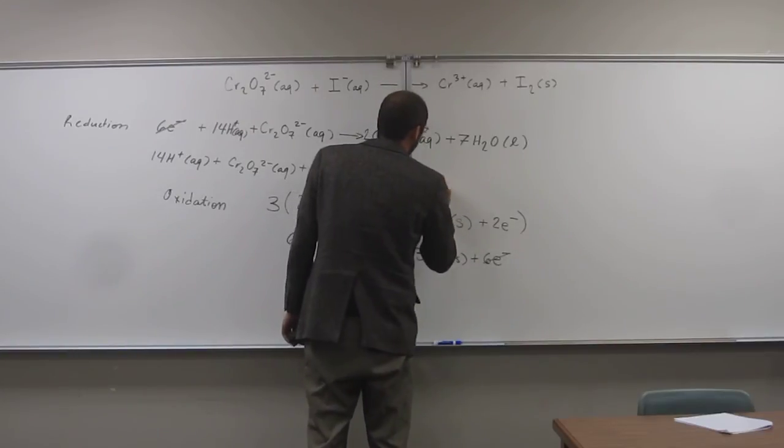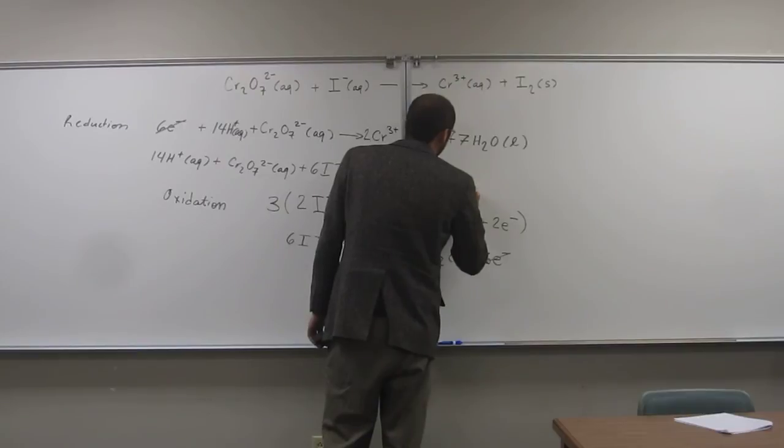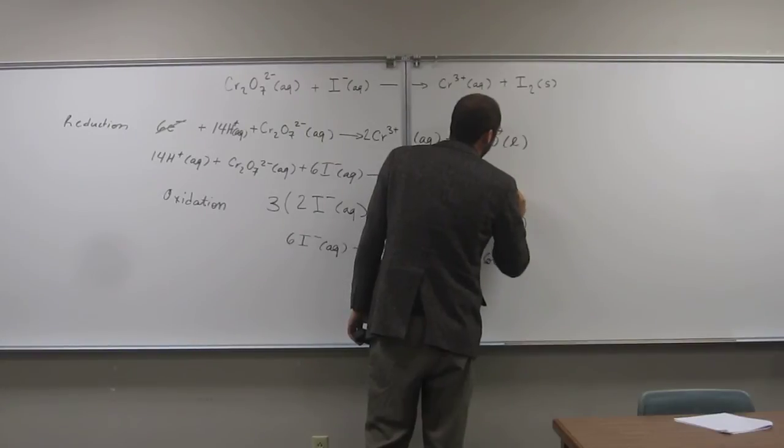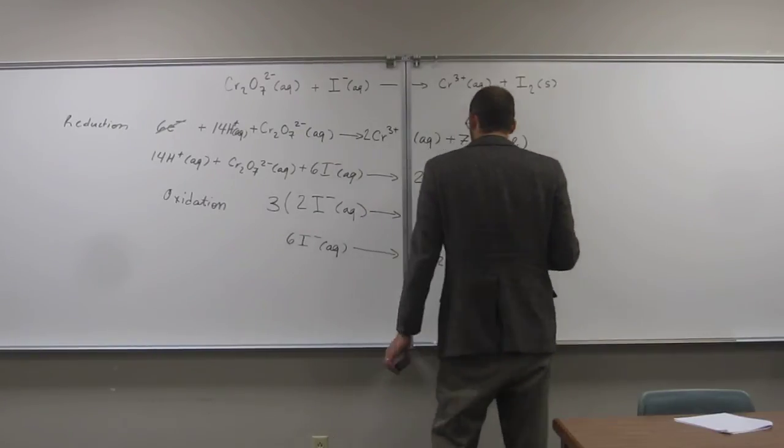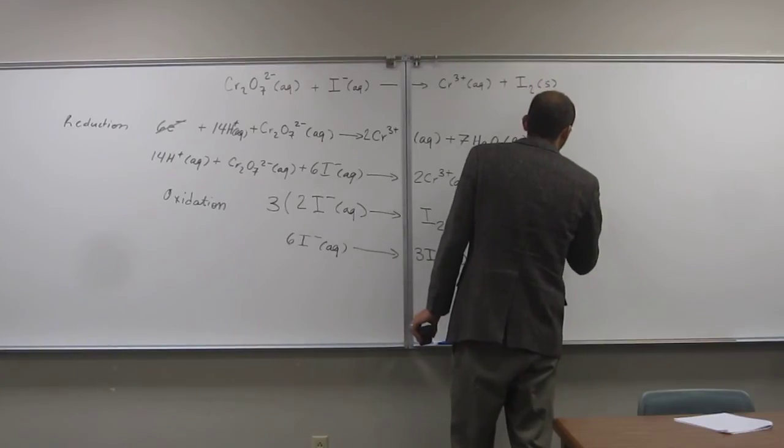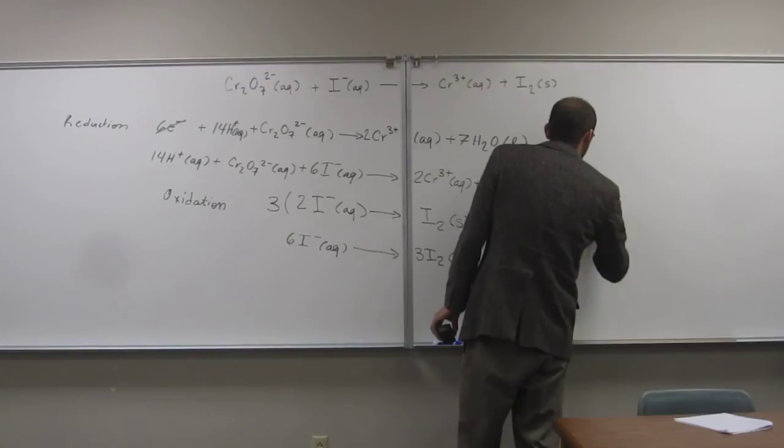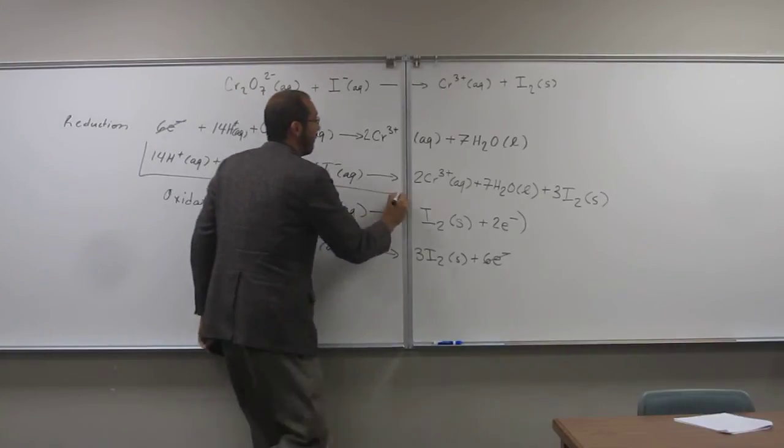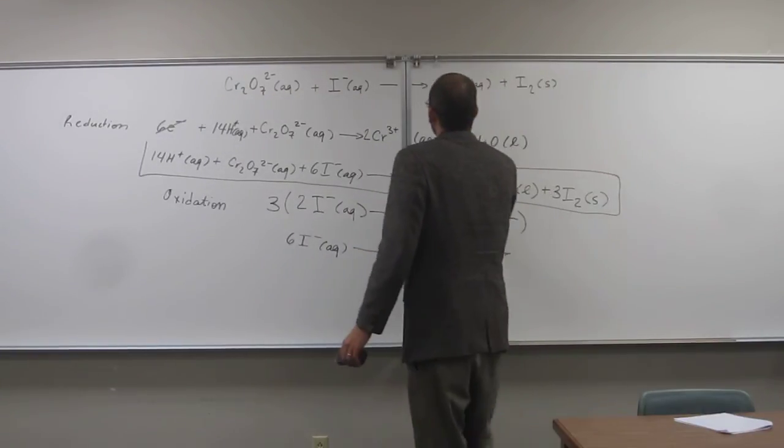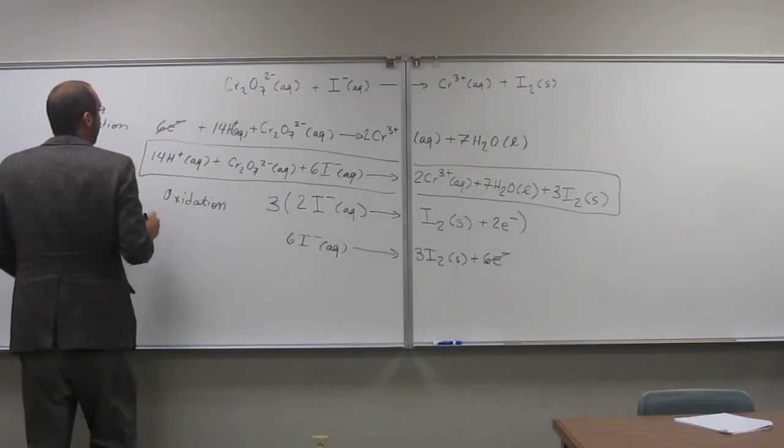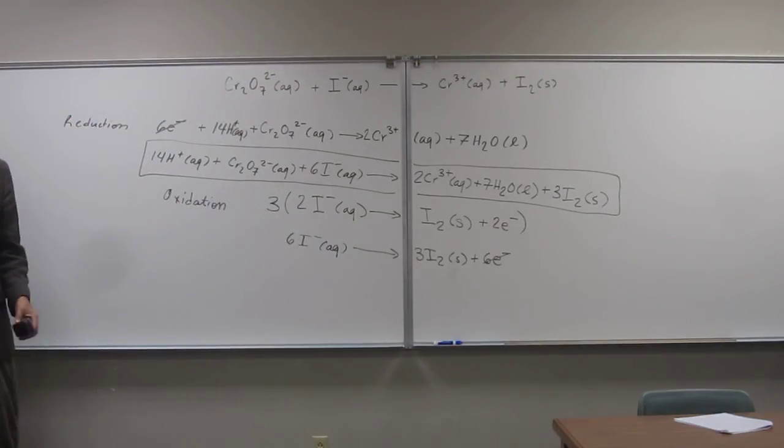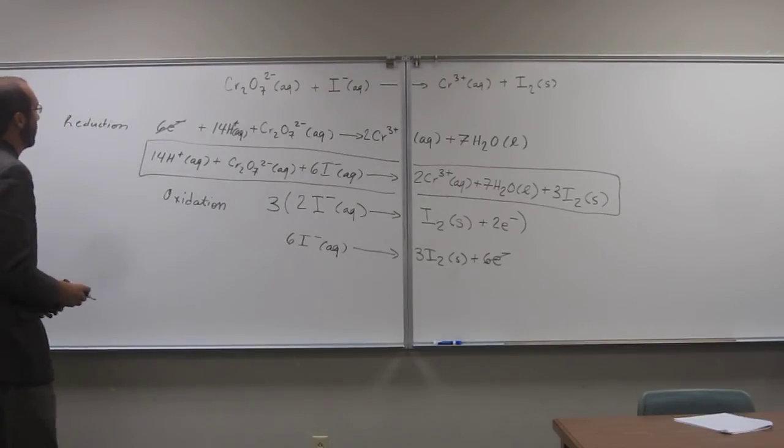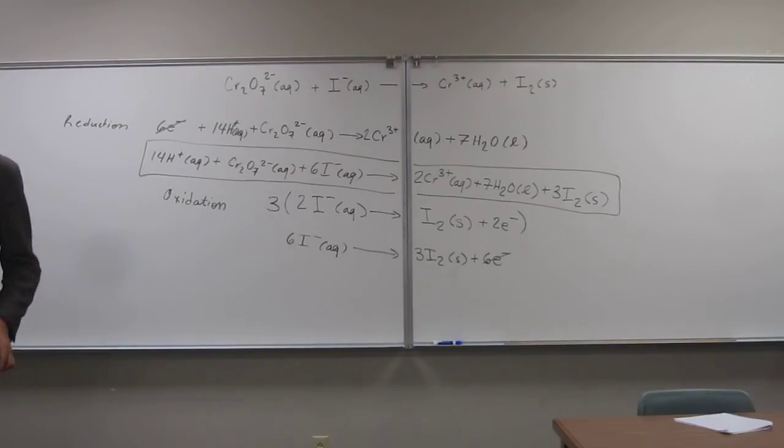So 2Cr3 plus aqueous, and now we're on to the product, plus seven water liquid, plus 3I2 solid. So the overall balanced reaction equation. And you can see that this reaction would occur in an acidic solution because there's protons in there. You see that? So yeah, so that's the overall balanced equation. So you think you can do that on your own then? OK, wonderful.